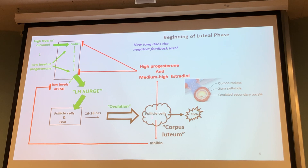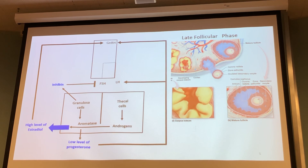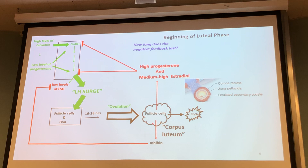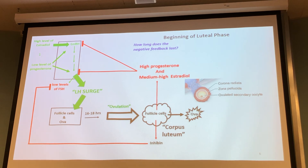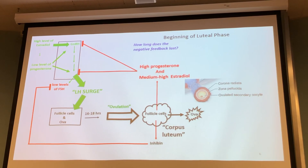The remaining follicle cells — the cloud of follicle cells still in the ovary — were the ones producing estradiol, progesterone, and inhibin, so they're still making their hormones. But now those remaining follicle cells are producing high progesterone and medium inhibin. They've upped the progesterone production and reduced their estradiol production, while still producing inhibin as always.